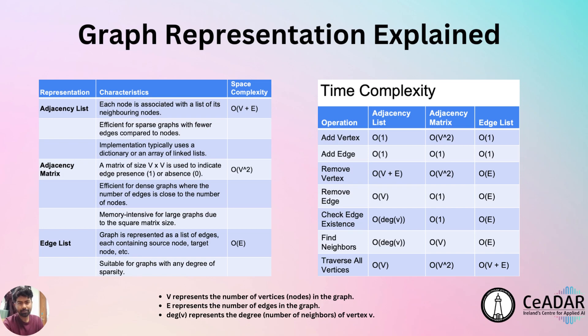The adjacency matrix representation uses a matrix of size V² to indicate edge presence or absence, resulting in a space complexity of O(V²) and a time complexity of O(V²) for adding vertices, with constant time for adding edges. It is efficient for dense graphs where the number of edges is close to the number of nodes, but can be memory-intensive for large graphs. The edge list representation is suitable for graphs with any degree of sparsity and represents the graph as a list of edges, with a space complexity of O(E) and constant time for adding vertices and edges. The choice of representation depends on graph sparsity, the operations to be performed, and the memory available.